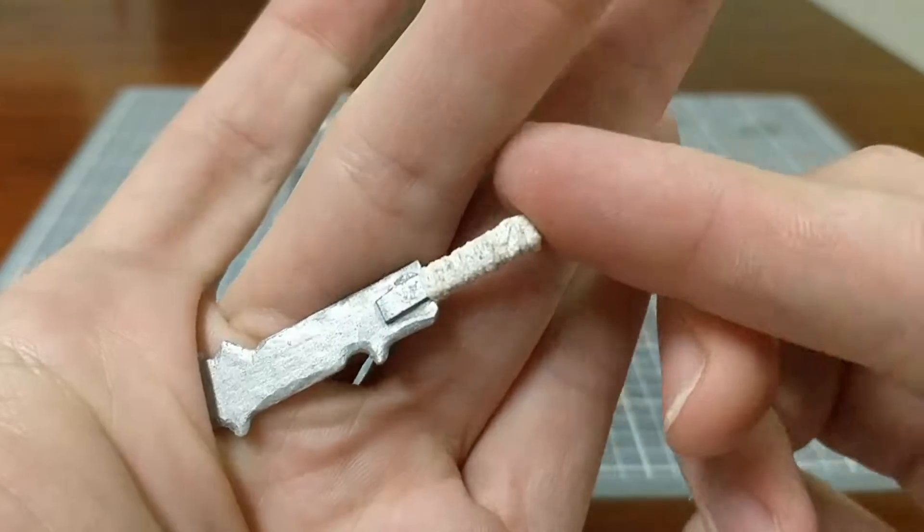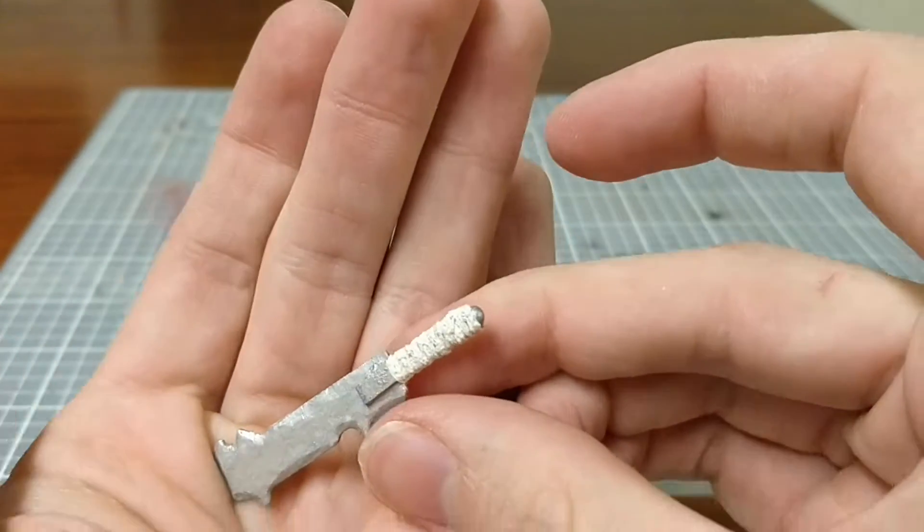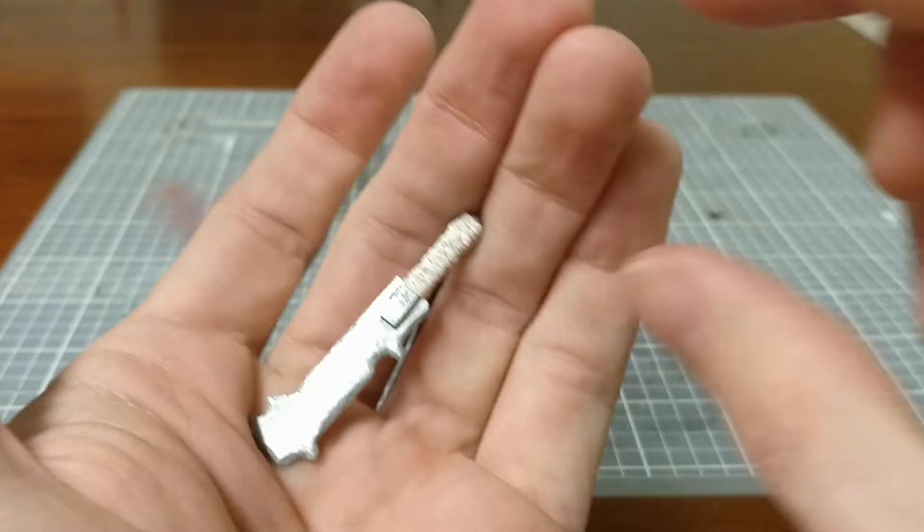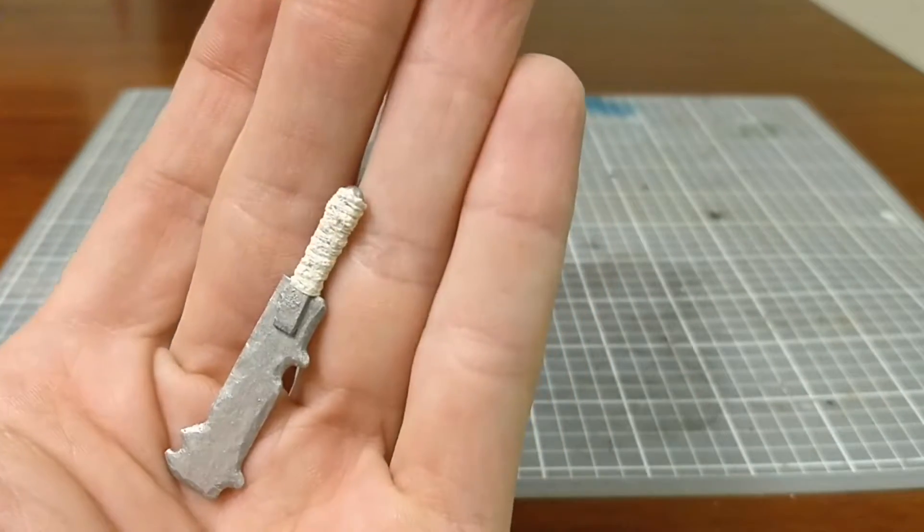At this point, I thought it looked kind of cool. And I probably should have stopped there, but I didn't. I wanted to set apart the blade a little bit. Maybe make it look like an iron sword instead of like a silver sword.